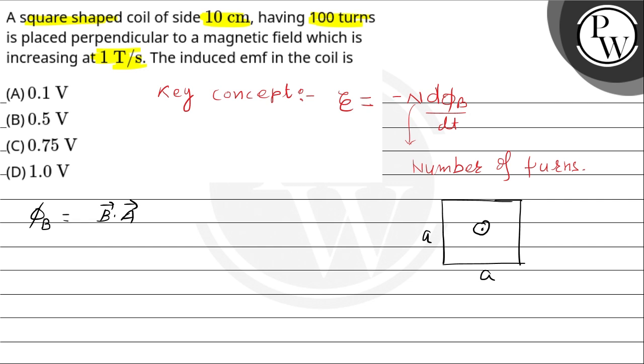If this loop is in the plane of the paper, then magnetic field will be either above the plane of the paper or into the plane of the paper. Let it be above the plane of the paper. And the area vector of this coil will also be perpendicular to the plane.